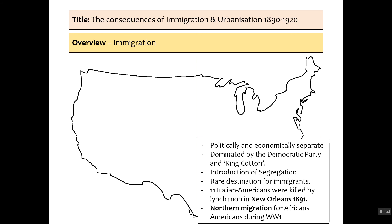The south is relatively politically and economically separate. Remember it's dominated by the Democratic Party. Cotton is still king in the southern states, and in this period between 1890 and 1920 we see segregation start to increase — we'll talk about that in the next video. It's therefore a rare destination for immigrants, and on the occasions they do arrive it tends to lead to animosity. We can use the example in New Orleans in 1891 of 11 Italian Americans being killed by a lynch mob. And of course we've got a mass exodus in the form of African Americans before World War One, which we call the Great Northern Migration.